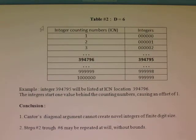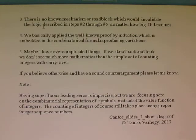Conclusion 1: Cantor's diagonal argument cannot create novel integers of finite digit size. 2: Steps number 2 to number 6 may be repeated at will without bounds. Step number 3: There is no known mechanism or roadblock which would invalidate the logic described in steps number 2 to number 6, no matter how big d becomes.